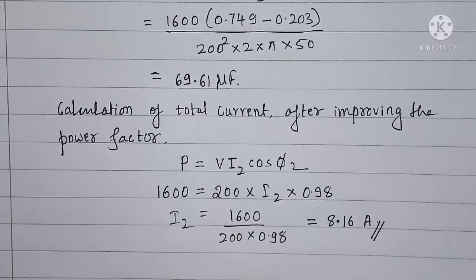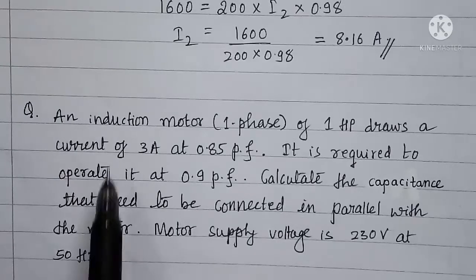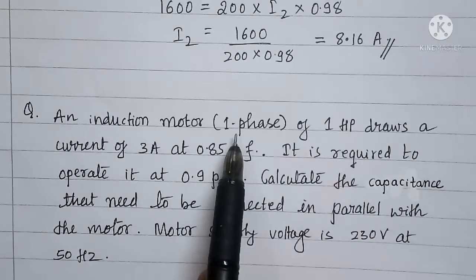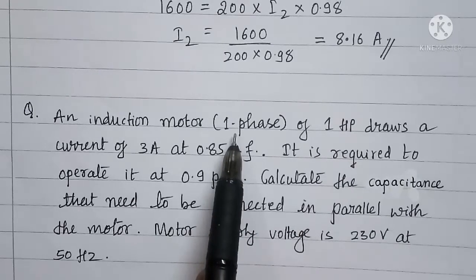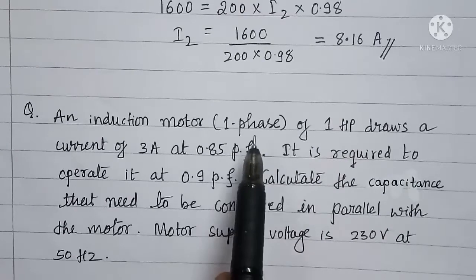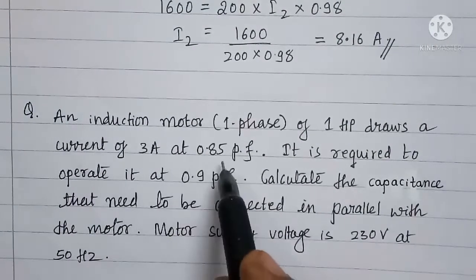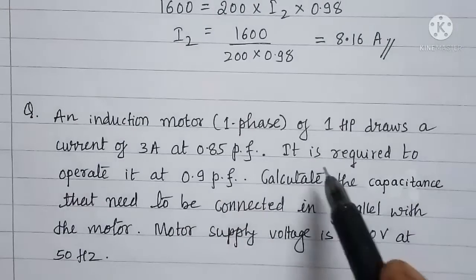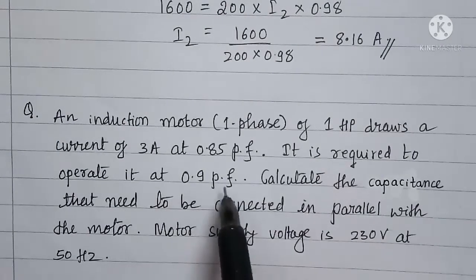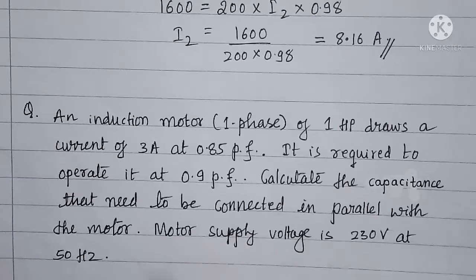Now we will take one more problem. An induction motor — here it is mentioned that the motor is single phase, though motors may be three phase also, which we will study later. Of one HP, it draws a current of 3 ampere at 0.85 power factor. It is required to operate it at 0.9 power factor. Calculate the capacitance to be connected in parallel with the motor. Motor supply voltage is 230 volts at 50 hertz.